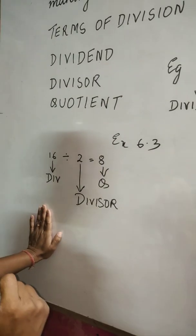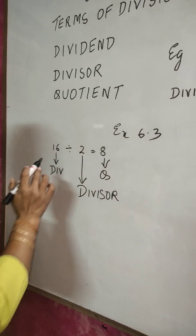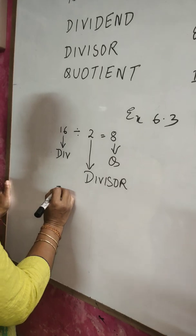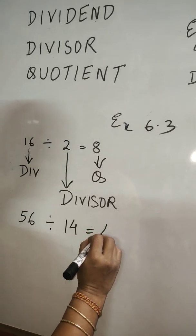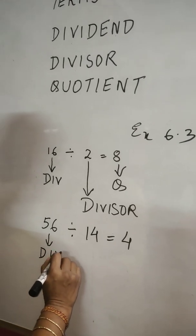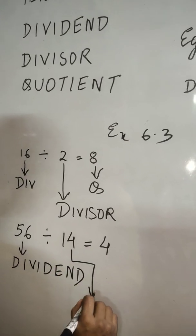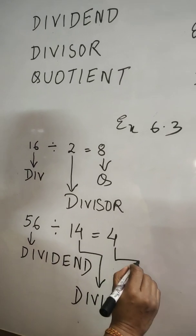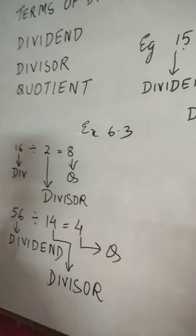You can do it in the textbook itself. Another example: 56 divided by 14 gives 4. So 56 is the dividend, 14 is the divisor, and 4 is the quotient. Exercise 6.3 is quite simple — you can easily work it out.